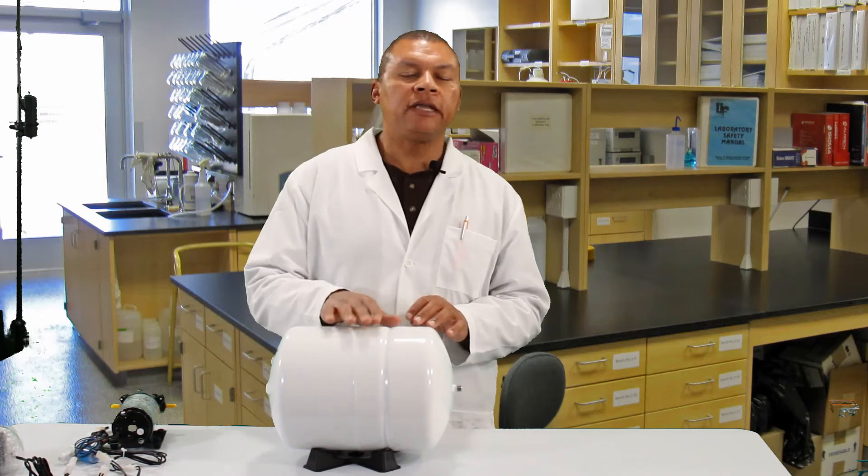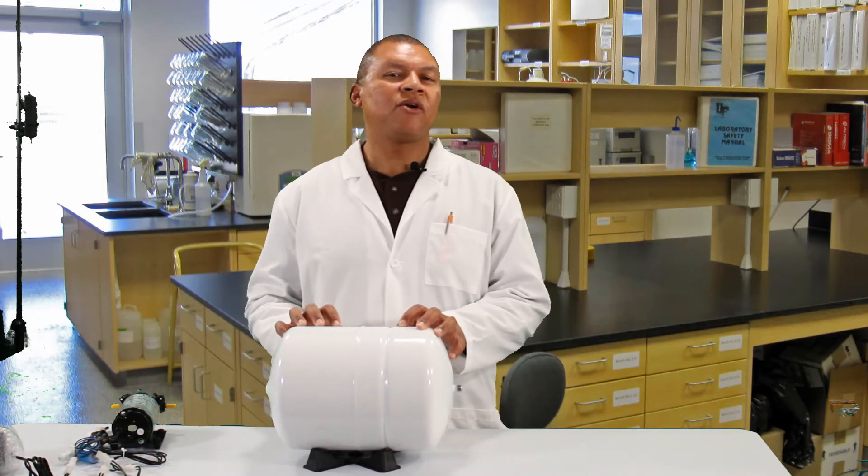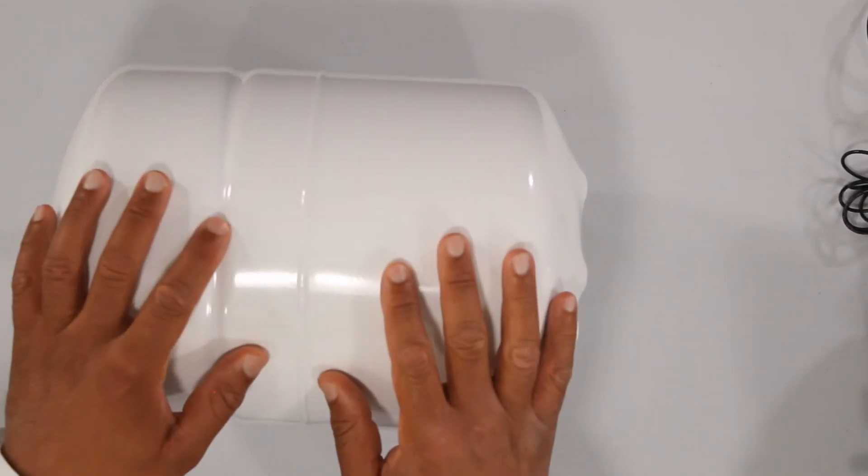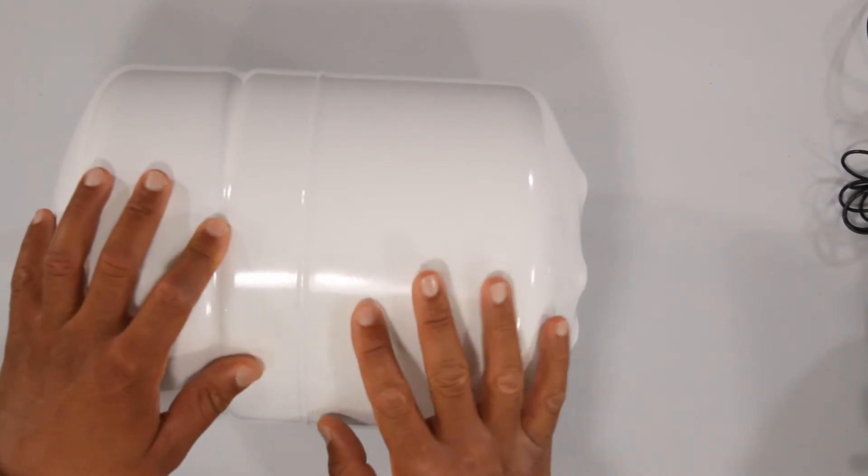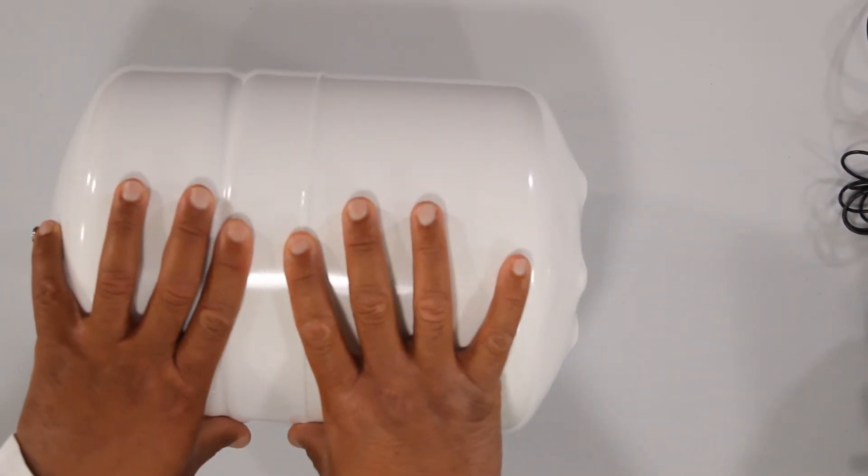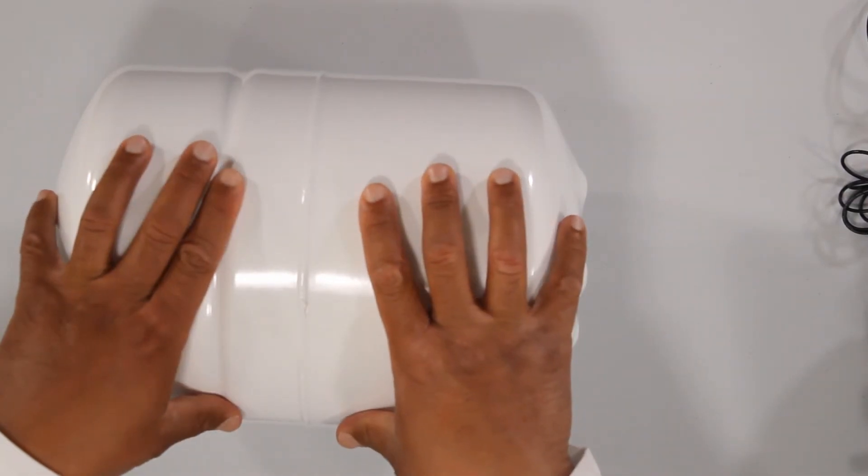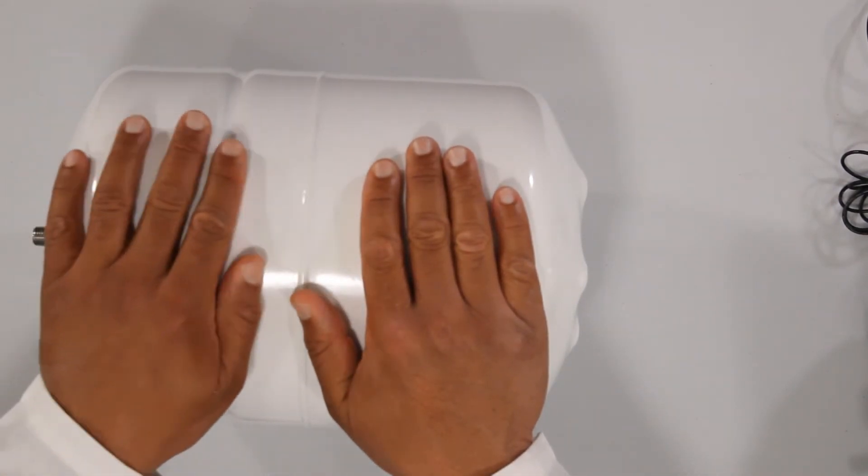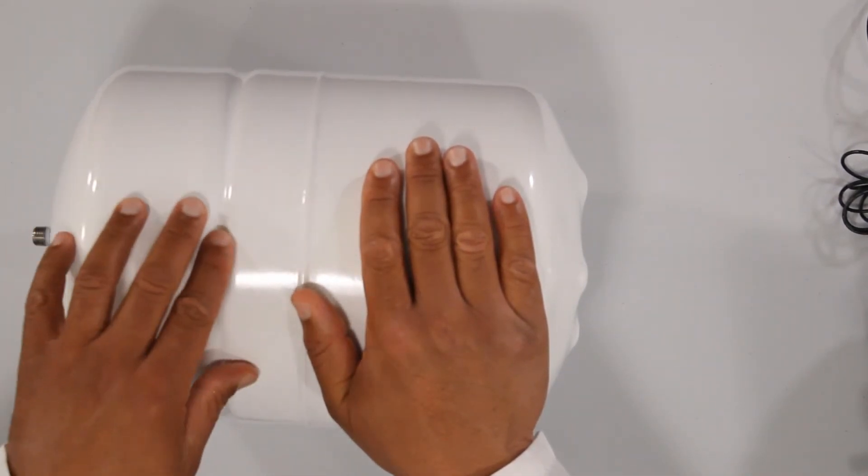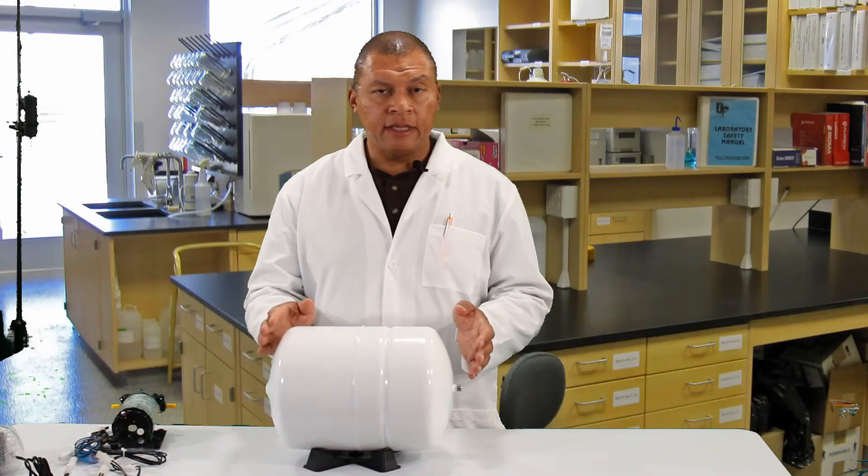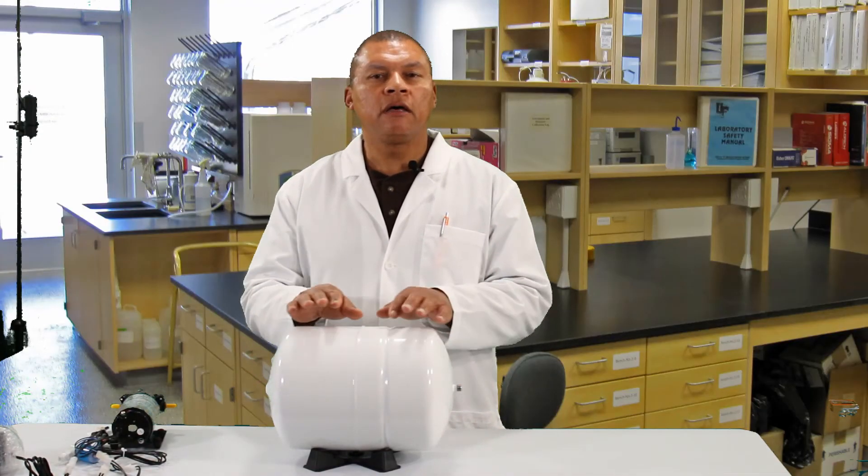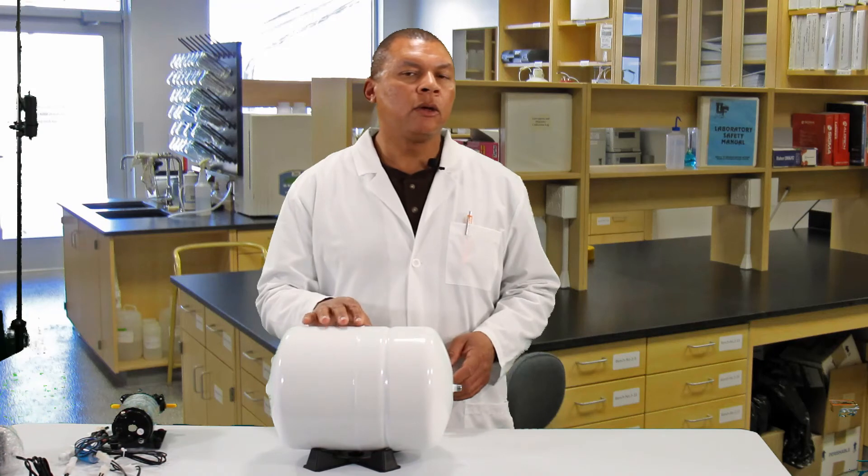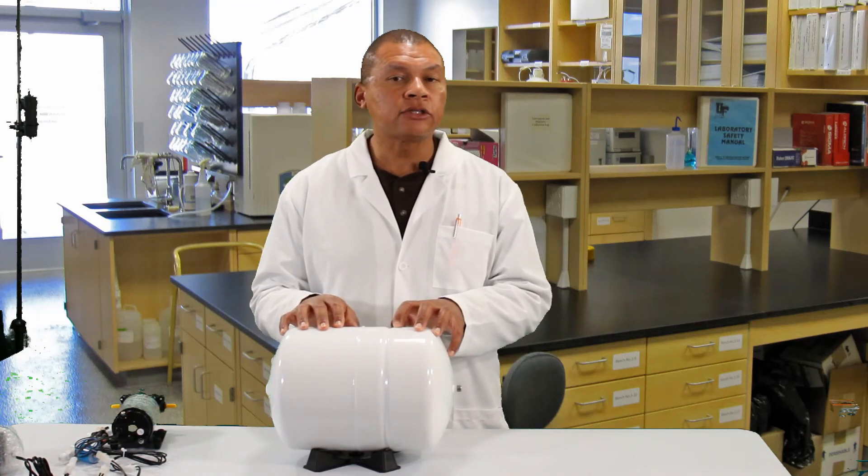Another question that might come up is what size pressure tank should I use, a large one or a small one? Well, keep this in mind. The larger your pressure tank, the more stagnant the nutrient will reside in your tank. The larger the tank, the longer the nutrient will reside in the tank before it exits. That means you have more possibility of buildup of solids in the tank.